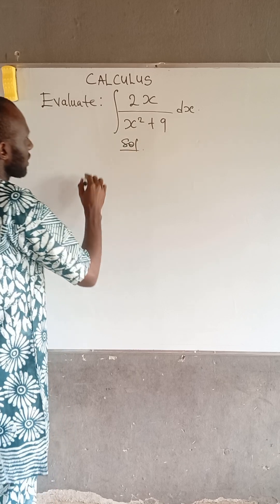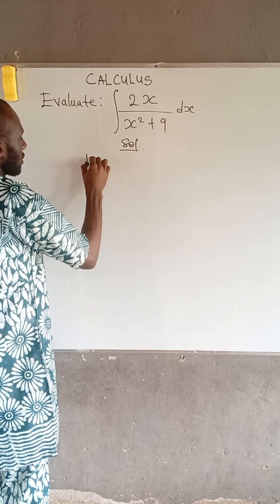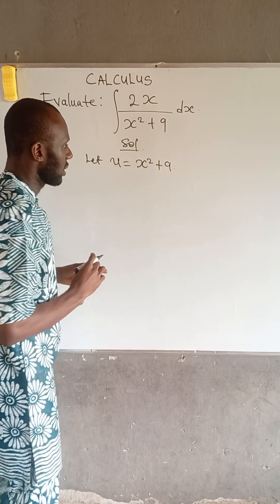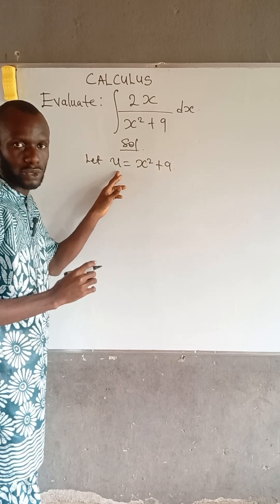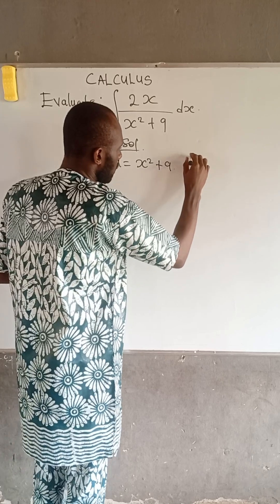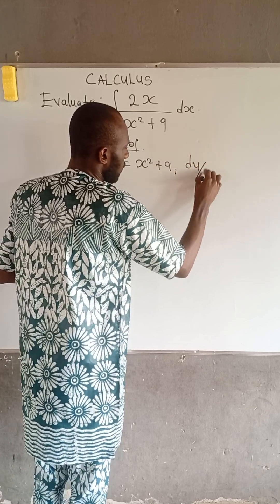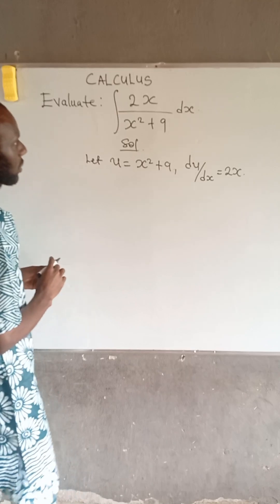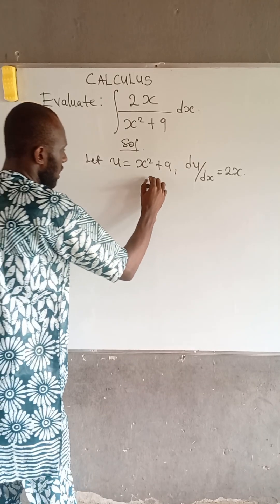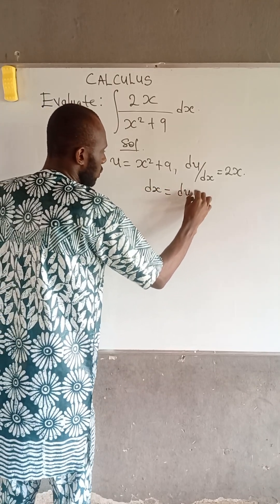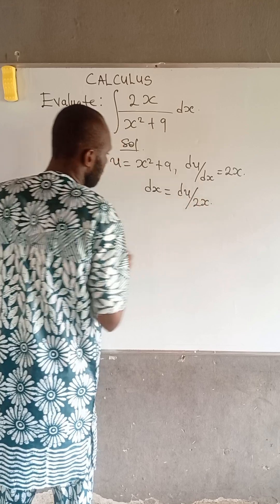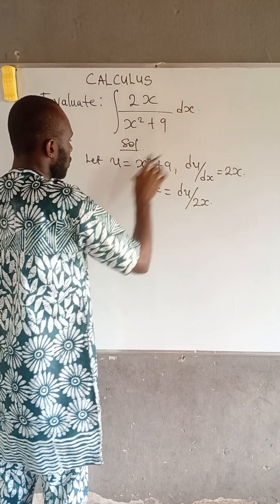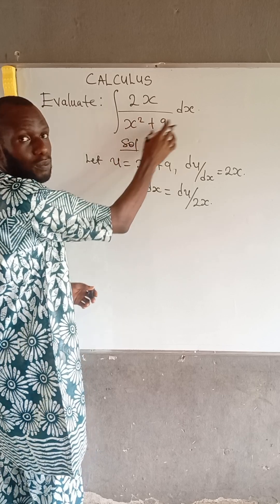We let u be equal to x squared plus 9. If we differentiate u with respect to x, we have that du/dx is equal to 2x. Therefore, dx will be equal to du divided by 2x. We substitute the value of x, where u is equal to x squared plus 9.